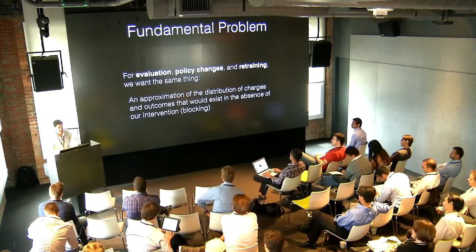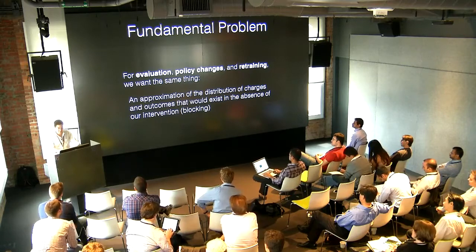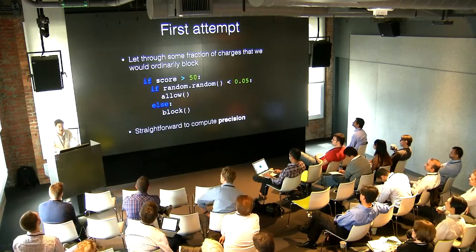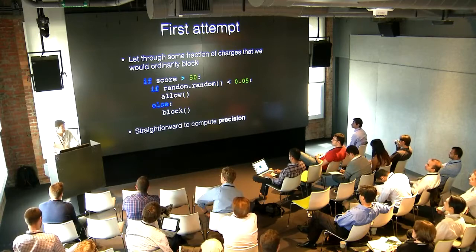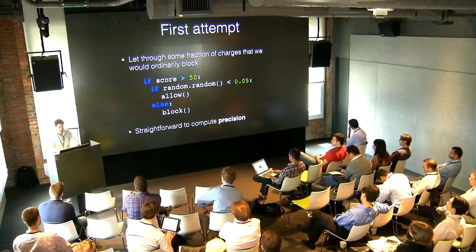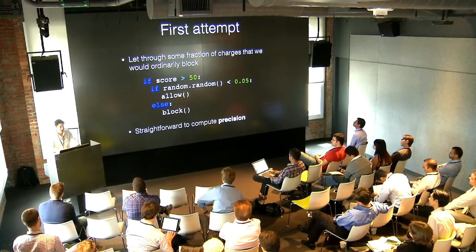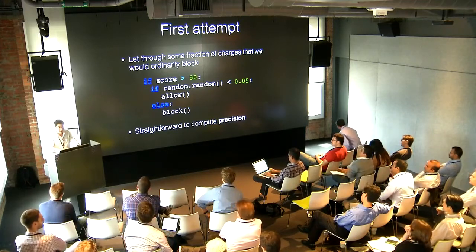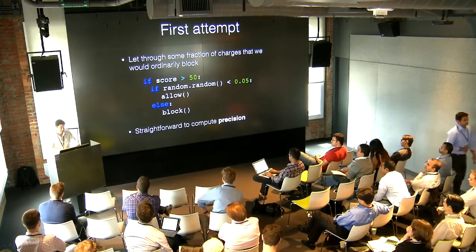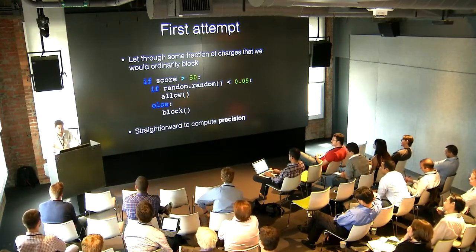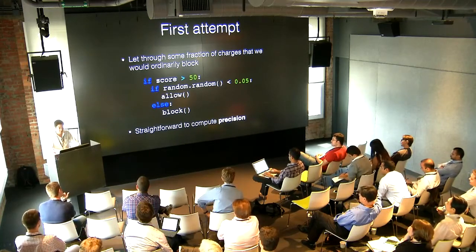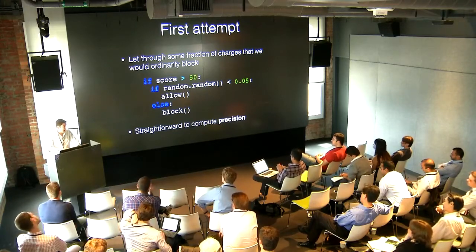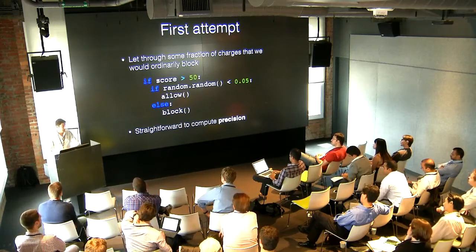The most naive thing you could do is say: for some fraction of the things we would block, let's actually not block them. For 5% of charges that exceed the triggering threshold — a score of 50 — we'll actually let them through and see what happens. So if score is above 50 and a random draw is less than 0.05, allow it; otherwise block. Then, to compute precision in production, of that fraction of charges we let through, what fraction end up getting disputed? That's our unbiased measure of precision.